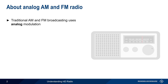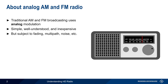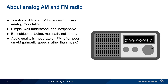Traditional AM and FM broadcasting uses purely analog modulation to transmit audio. Analog broadcasting is simple, well understood, and relatively inexpensive. But it's also subject to problems such as fading, multipath, noise, etc. By modern standards, FM radio quality is generally considered acceptable for music, but the much lower audio quality of AM radio means that it's now almost exclusively used for speech or talk radio.